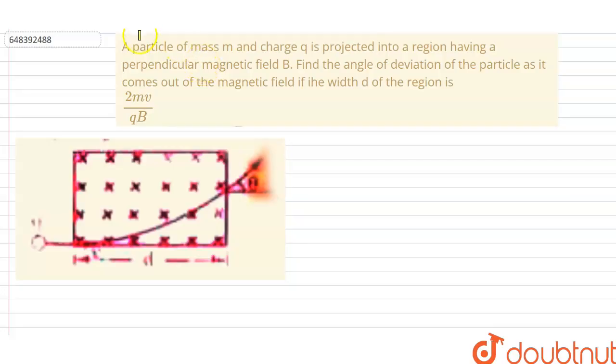Hello friends, now we are going to see the solution for the given question. A particle of mass M and charge Q is projected into a region having a perpendicular magnetic field B. Find the angle of deviation of the particle as it comes out of the magnetic field if the width D of the region is 2MB by QB.